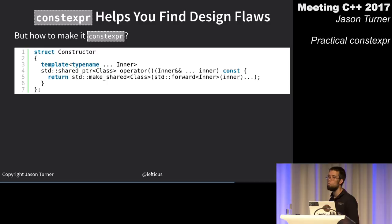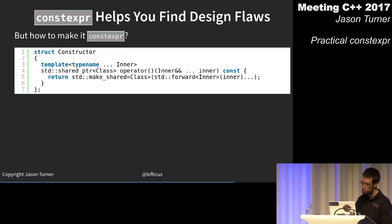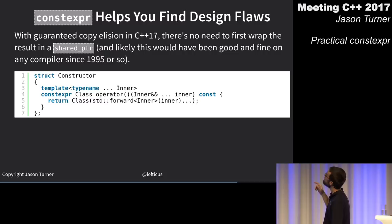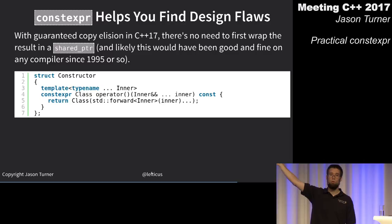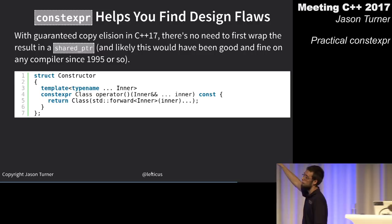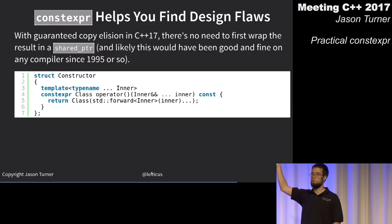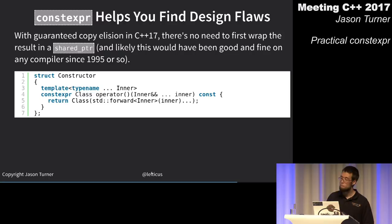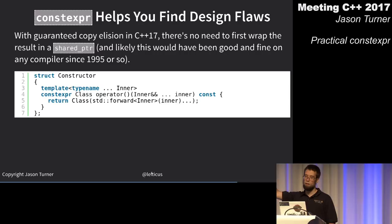C++17 gives an easy solution: just return the object directly. We have a guarantee in C++17 that this is not a copy or a move — the object is returned with zero cost. Every compiler since 1995 does this optimization anyway, but now I can make this function constexpr. Applying constexpr helped me find this design flaw.